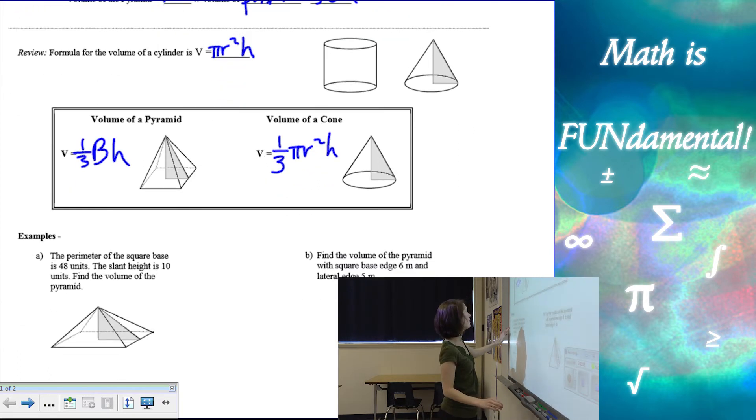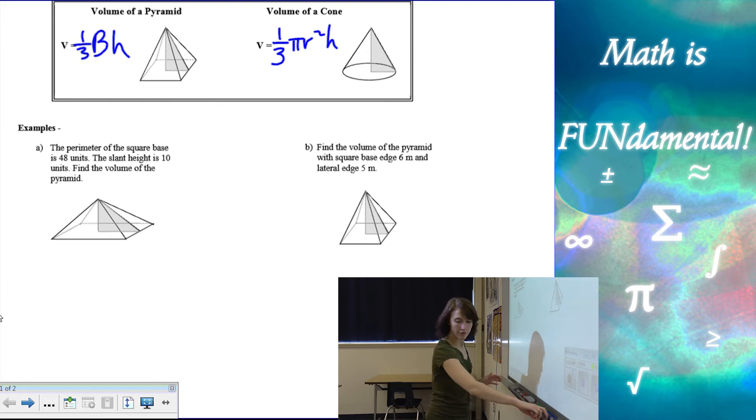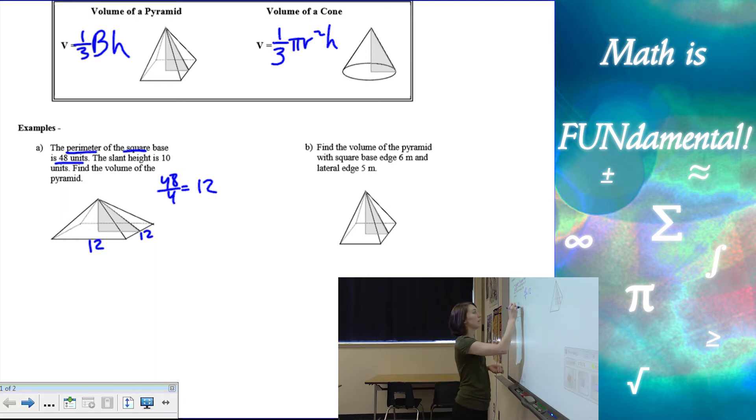All right, let's look at a couple examples here. So our first example, we have the perimeter of the square base is 48 units. So it tells us that it's a square, so we know all the sides are the same. The perimeter is 48, which means 48 divided by 4 gives us 12 units for each side length. Now the slant height, which is this one here, is 10 units. We need to find the volume.